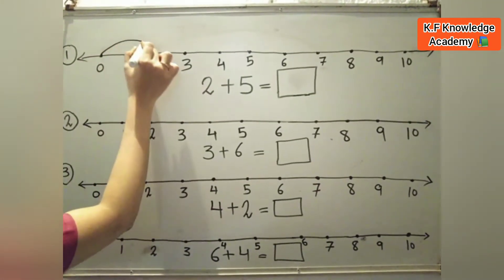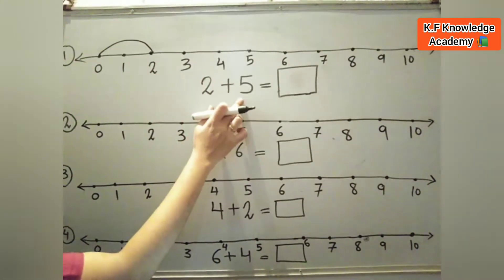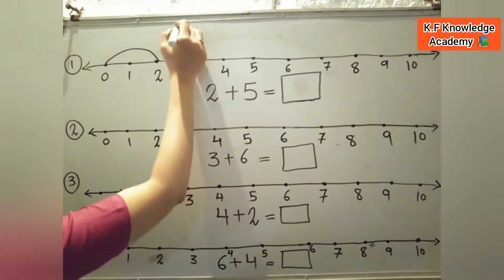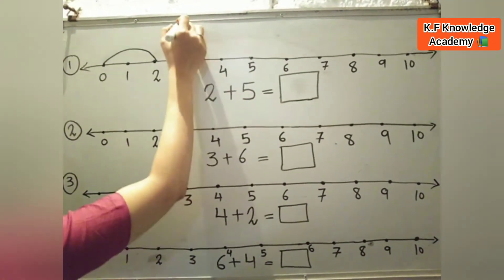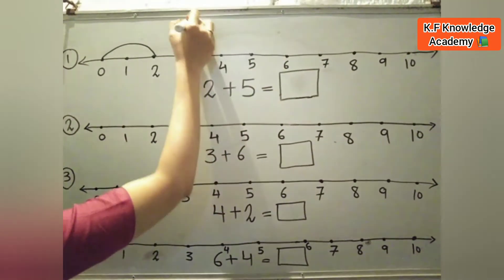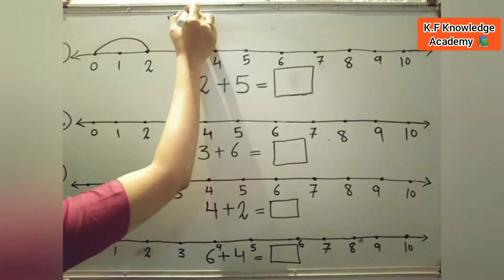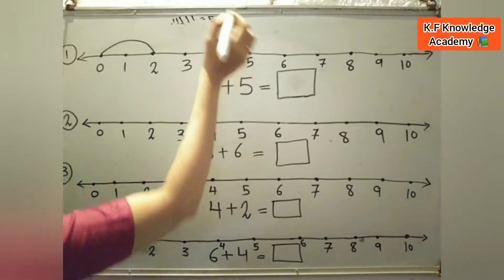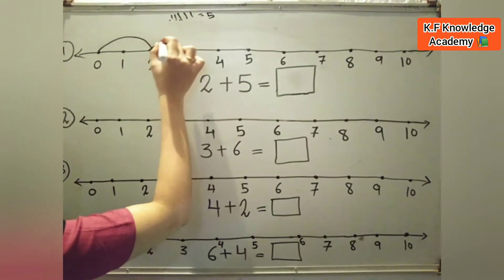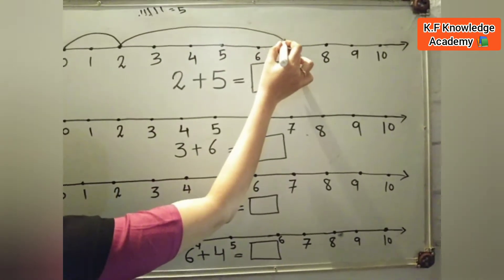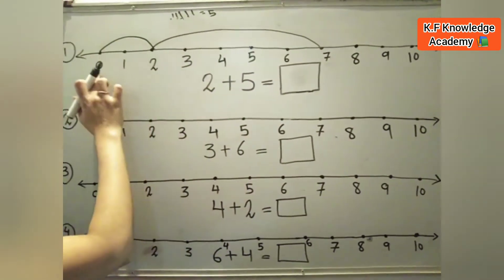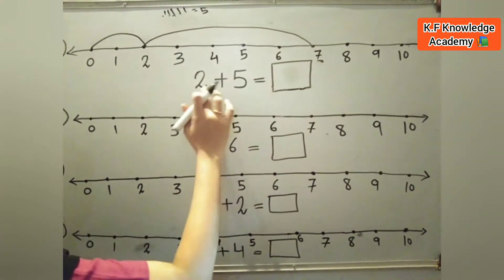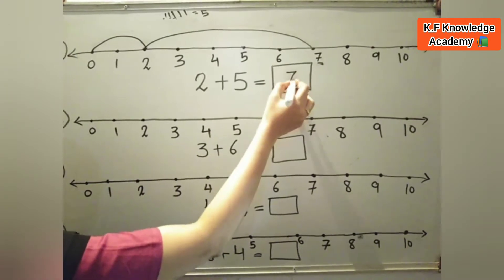We go from 0 to 2, then we count 5 numbers: 2 to 3 is 1, then 2, 3, 4, and 5. So we match 2 to 7 and make a half circle. The answer is 7, because 2 plus 5 is equal to 7. So we write 7 in the box.